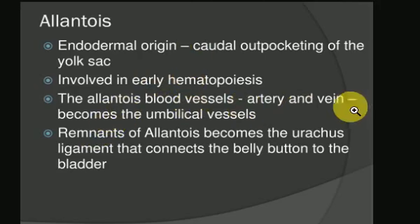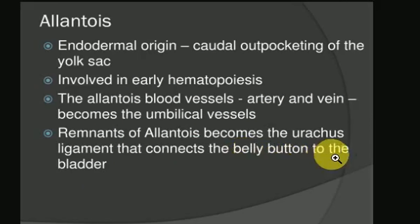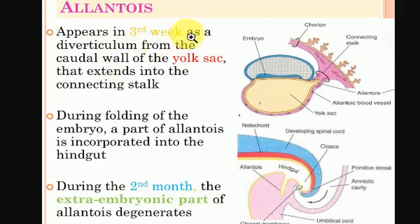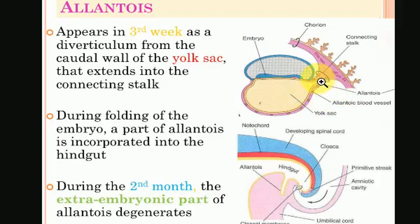The remnants of the Allantois become the urachus ligament that connects the belly button to the bladder. The Allantois appears in the third week as a diverticulum from the caudal wall of the yolk sac.